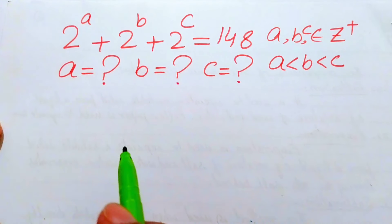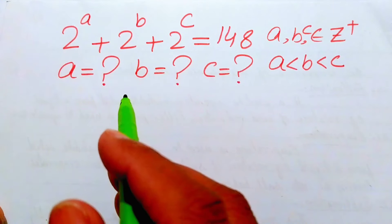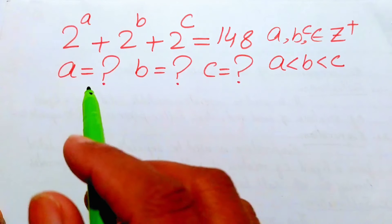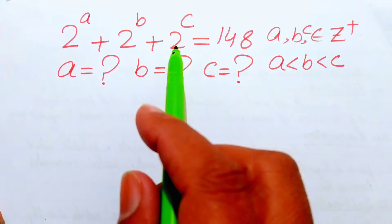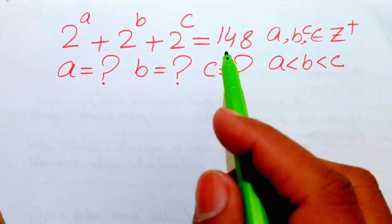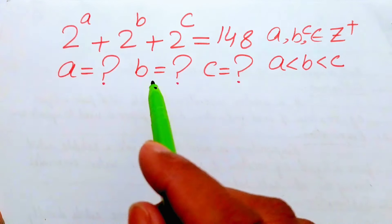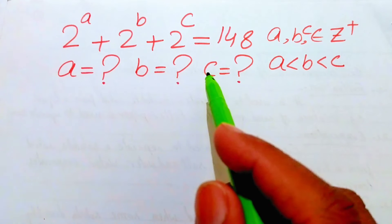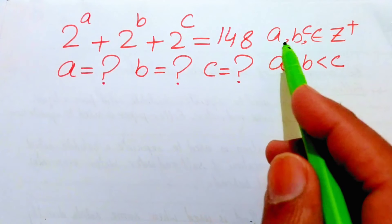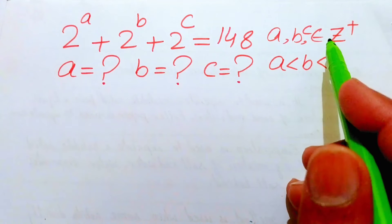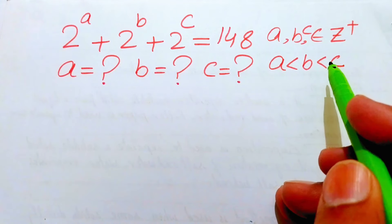Hello everyone, welcome back to the Map of Mathematics. In this video we are going to solve a nice math algebra problem: 2 to the power of a plus 2 to the power of b plus 2 to the power of c equals 148. We need to find the values of a, b and c, where the restriction is that a, b and c must be positive integers and a is less than b is less than c.